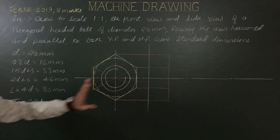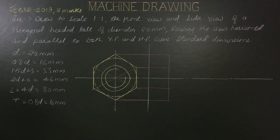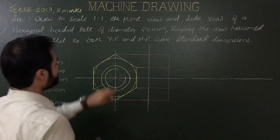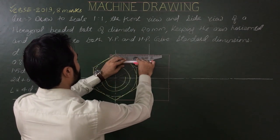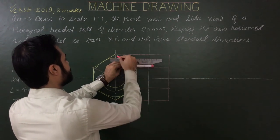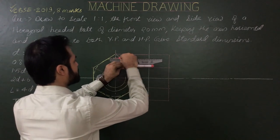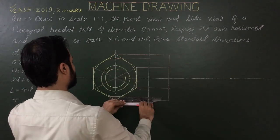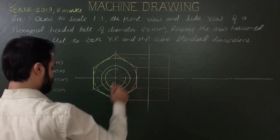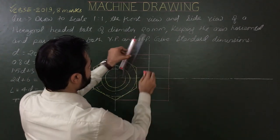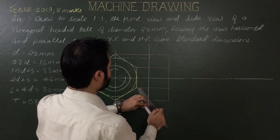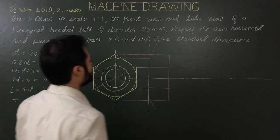For construction of the bolt head, steps are similar to that of a nut. Mark the limits of the points of intersection of the chamfering circle with the vertical axis. From these two points, at an angle of 30° from the line, draw chamfering lines.